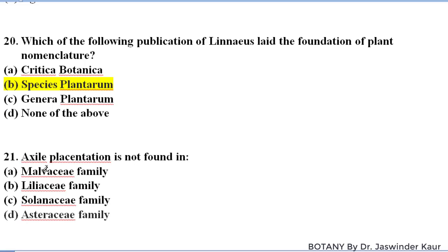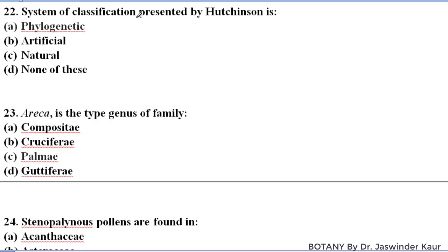Axile placentation is not found in Asteraceae — axile placentation is found in Malvaceae, Liliaceae and Solanaceae, but in Asteraceae, basal placentation is found and a single basal ovule is present.